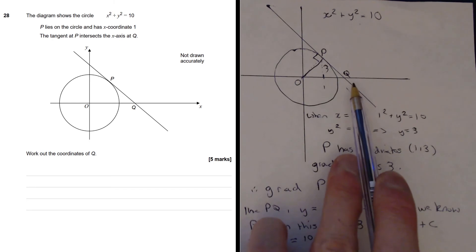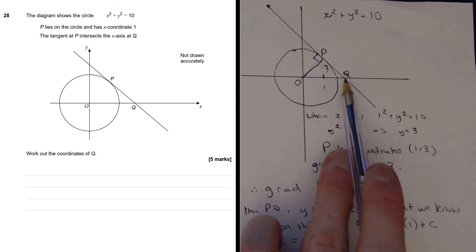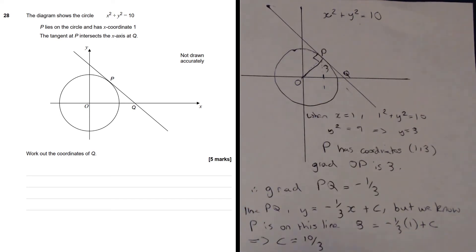So now how do we find the point Q, because we know Q lies on this line? This happens when y is 0. So for Q, we're going to put 0 into this, so 0 equals minus 1 third x, which is minus 1 over 3 x, plus C, which we know is 10 over 3.